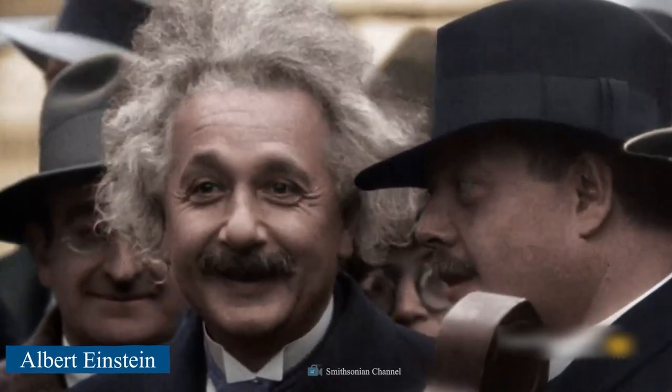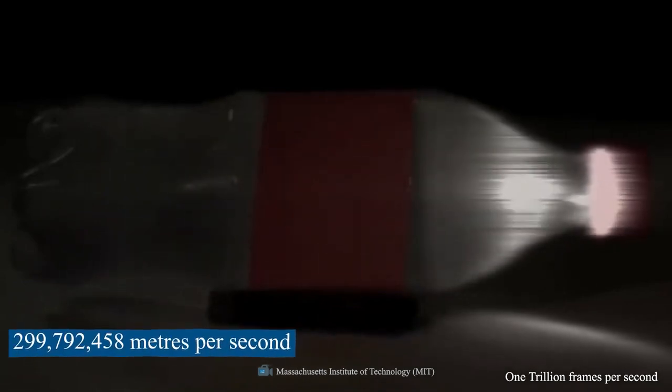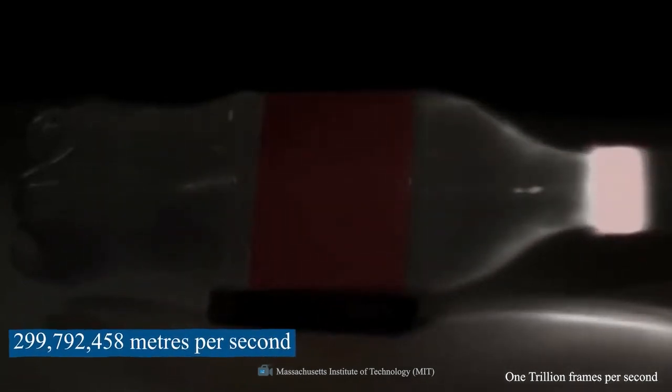Albert Einstein, known as the father of modern physics, based his special theory of relativity on the premise that no object can travel faster than the speed of light, which is 299,792,458 meters per second.